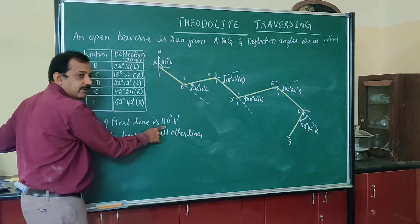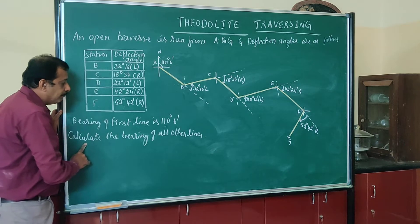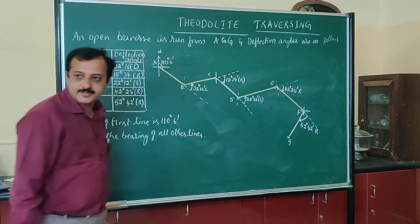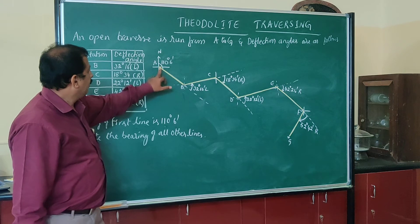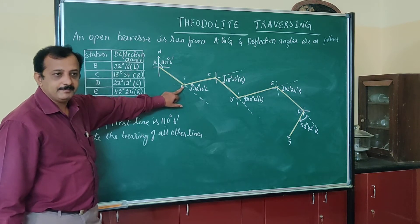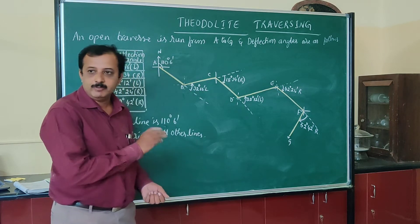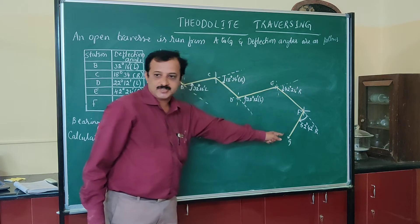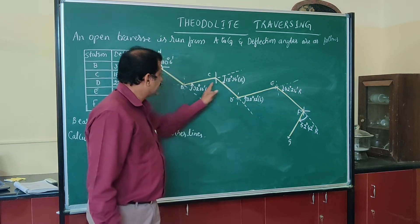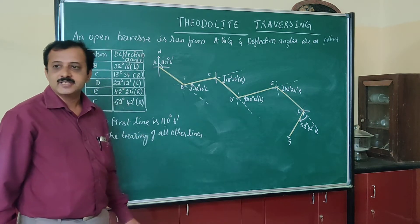In this problem, the bearing of the first line AB is given as 110 degrees 6 minutes, and we have to calculate the bearing of all the other lines. We will plot this on a sheet — not necessarily accurately to scale — just with respect to direction, and then calculate the bearing of each line.